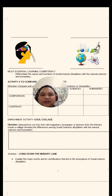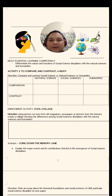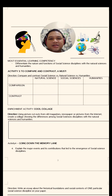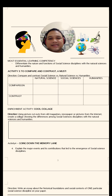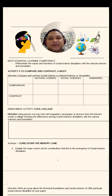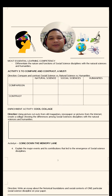For this next activity, the most essential learning competency is to differentiate the nature and functions of social science disciplines with the natural sciences and humanities. So you're going to compare and contrast natural sciences, social sciences, and humanities. This activity will be called 'To Compare and Contrast, A Must.' Direction: you're going to compare and contrast social science versus natural science and humanities.